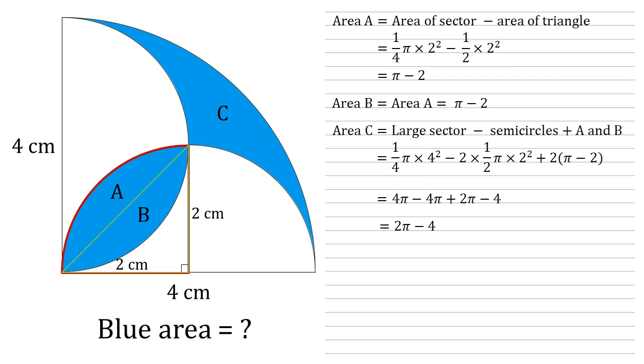One last step, we now just need to add together the areas of A, B and C. So we've got π minus two for A. We've got π minus two for B. And we've got two π minus four for C. Bringing that all together, we end up with a blue area that's equal to four π minus eight square centimeters.